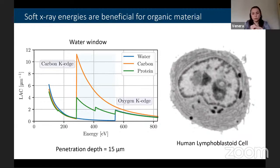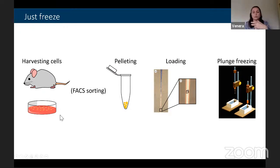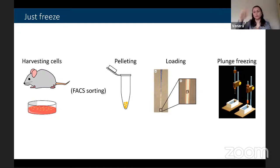Because of this natural contrast, the sample preparation for soft x-ray tomography can be summarized as: just freeze. Cells from model organisms or petri dishes are pelleted and loaded with a micro-loader into thin-wall glass capillaries — the same kind used for injection into model organisms. This capillary is then rapidly plunged into liquid propane and the specimen is frozen. There is no need for fixation, no need for labeling — the contrast comes naturally.